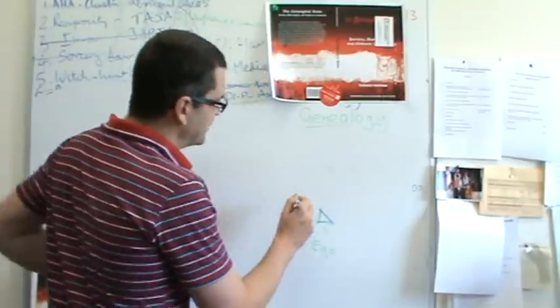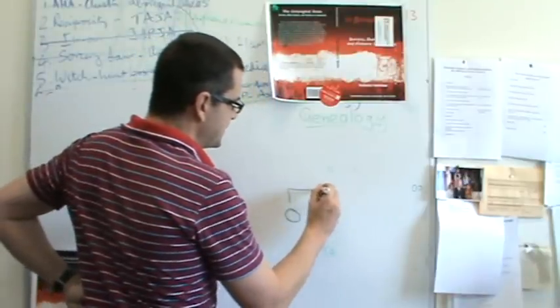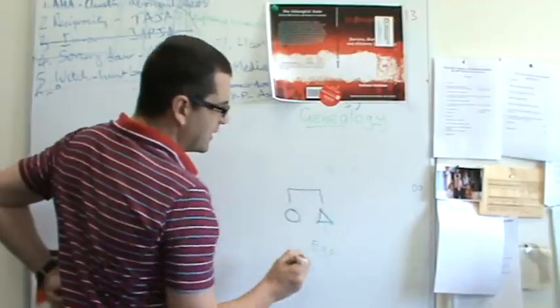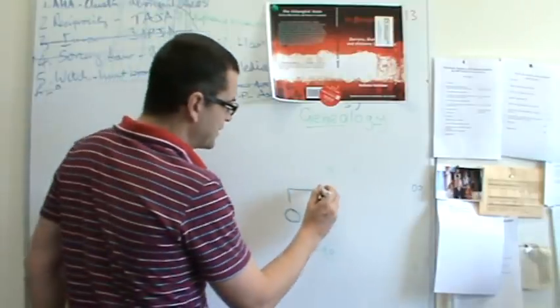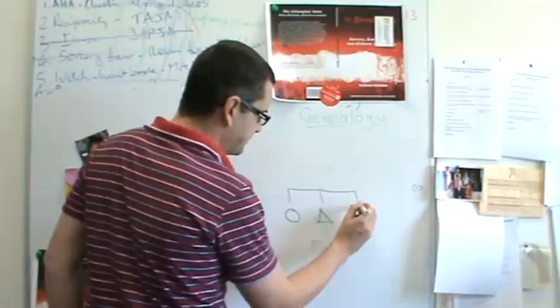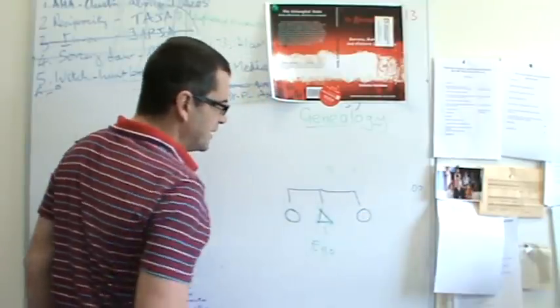So write a triangle for yourself. And then if you have a brother or a sister, draw a line up and then a line across. I'm going to draw another line across because I have another sister.